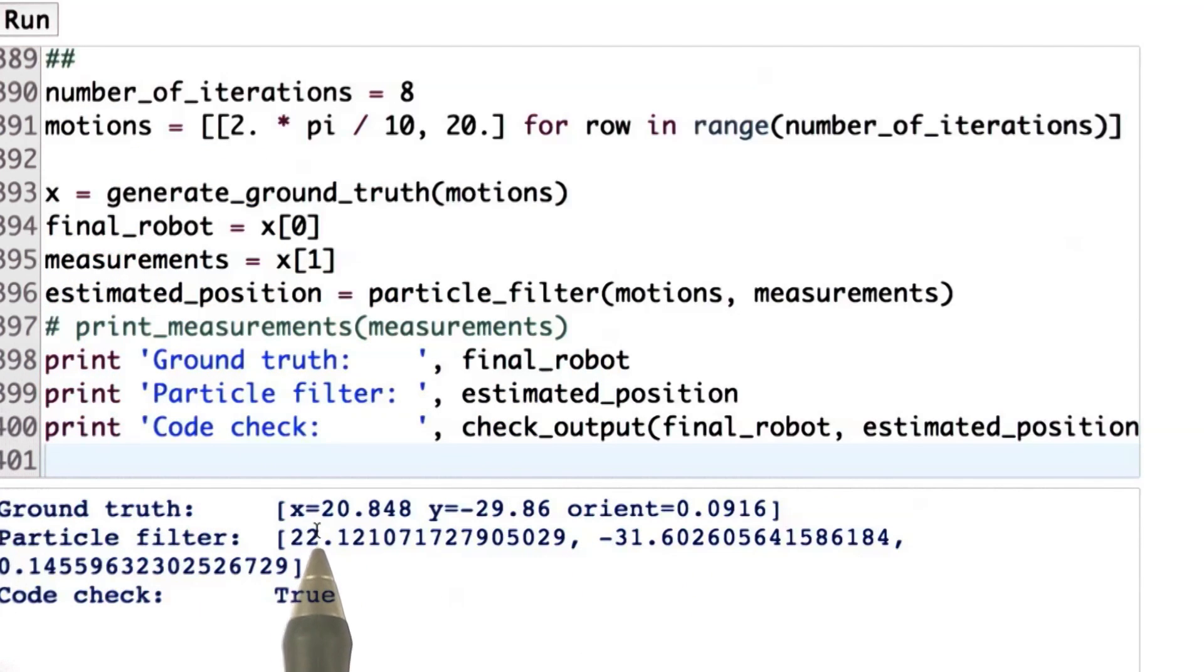We generate a robot that finished at final location 20 minus 29, and this orientation over here. The particle filter came up with 22 minus 31 and 0.14, which is close to the originals, and my code check said true. Let me run it again.